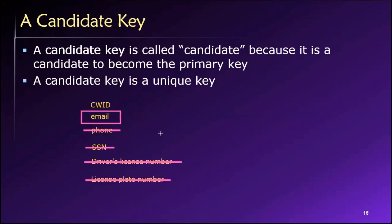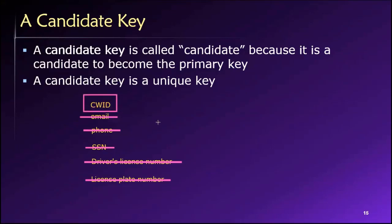An email address would work, but there are reasons we might not want to use it. It's typically a long string of text, which might not be computationally efficient. Also, email addresses can be changed — if your address were compromised, the university could issue you a new one. So they're more mutable, more changeable than other things. We can find reasons not to use a lot of these options, and what we settle on is the campus-wide ID.